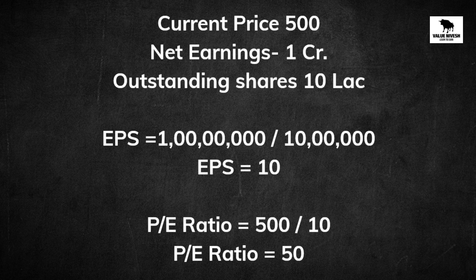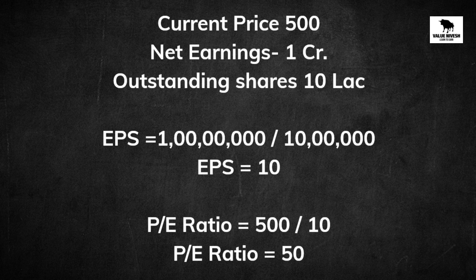Now we can use the calculated EPS and the market price per share to calculate the price-to-earnings ratio: market price per share divided by earnings per share, which is 500 rupees divided by 10 rupees. So our price-to-earnings ratio will be 50. This means investors are willing to pay 50 times the company's earnings per share for each share of stock.